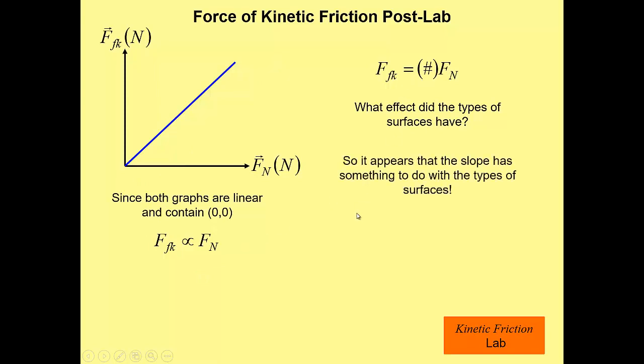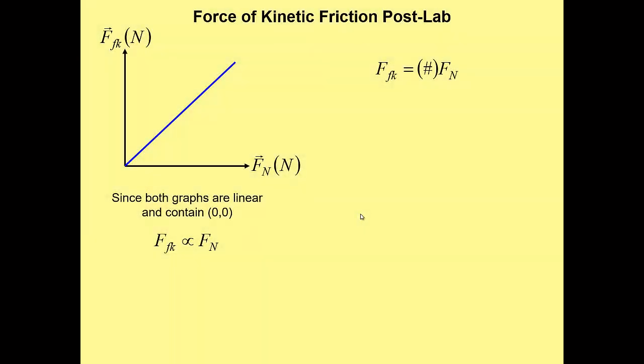Didn't change the relationship. What it changed was the slope. So perhaps the slope has to do with the types of surfaces. Each type of or combination of surfaces might have a different slope. Right, and that would be a handy thing to know because then you could predict an amount of friction.